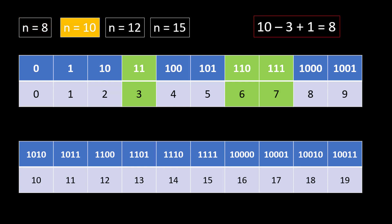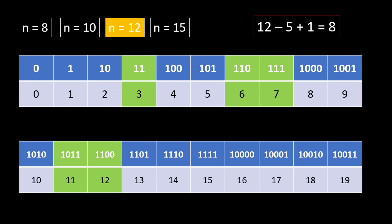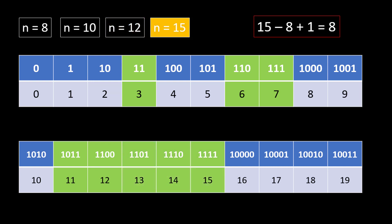Moving to n = 10, there again exist only three numbers whose binary representation contains consecutive ones, so we return 10 minus 3 plus 1, which is 8. For n = 12, there are two more such numbers, so the answer becomes 12 minus 5 plus 1, which is 8. And similarly for n = 15.